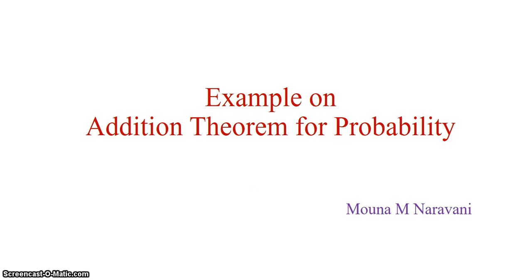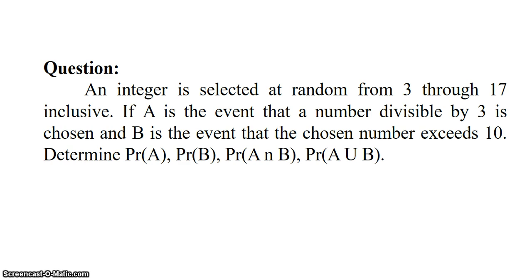Hello everyone, Mauna Narwani here. Today we will be discussing an example of the addition theorem for probability. The question is: an integer is selected at random from 3 through 17 inclusive. If A is the event that a number divisible by 3 is chosen, and B is the event that the chosen number exceeds 10, determine probability of A, probability of B, probability of A intersection B, and probability of A union B.